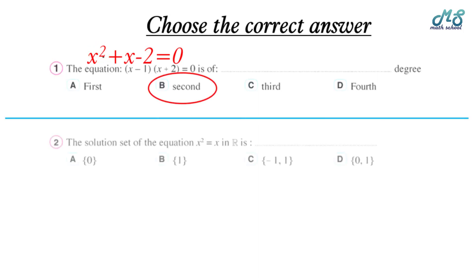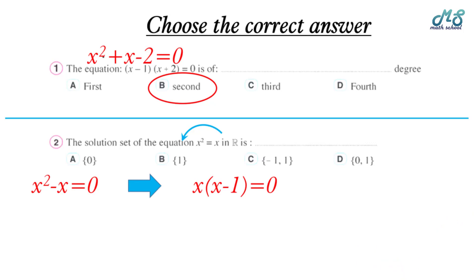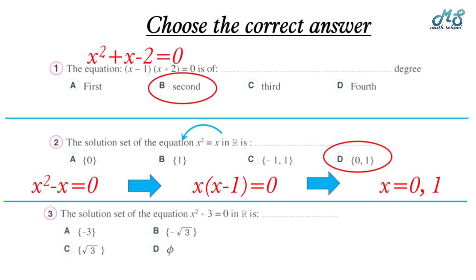Number two: find the solution set of x squared equals x in ℝ. Rewrite as x squared minus x equals zero. Factorize as x times x minus 1 equals zero. We deduce x equals zero and x equals 1, so the solution set is {0, 1}.